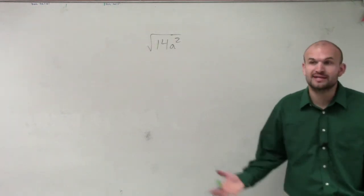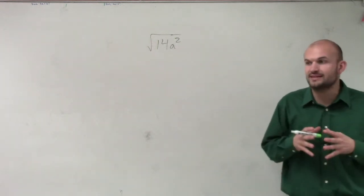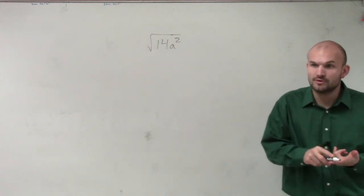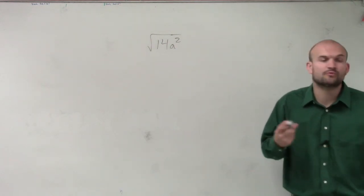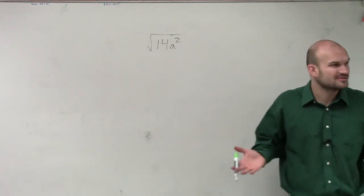So since we can't take the square root, the next thing we want to do is simplify it. Can we rewrite 14? Can we take the product of 14, which would be 7 times 2 or 14 times 1, and can we rewrite one of those numbers as a square number or a number squared? And the answer is no.